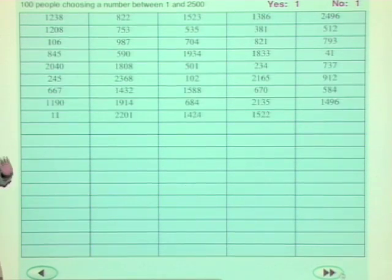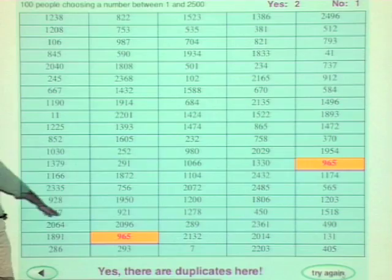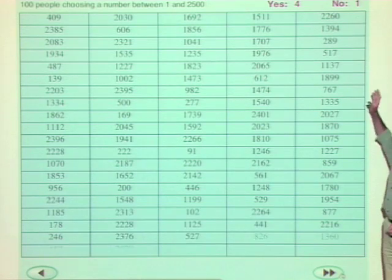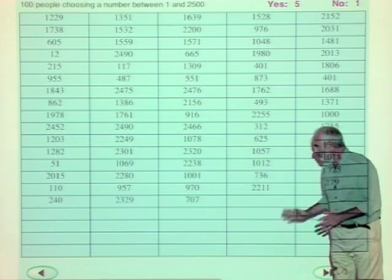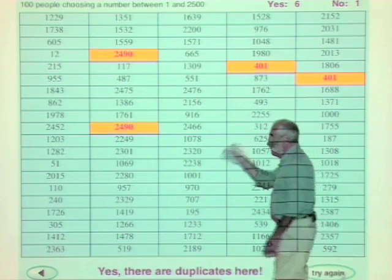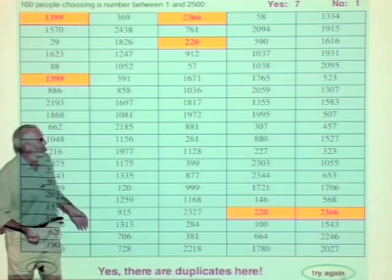Let's see it again — another hundred numbers between 1 and 2,500. Checking that: yes, there's a pair, 965. It turns out if we keep doing this again and again, most of the time we're going to find some matches. The first run showed it doesn't always work, but in fact seven out of eight times — about 87% of the time — we are going to find that at least two people chose the same number, and that seems quite remarkable.